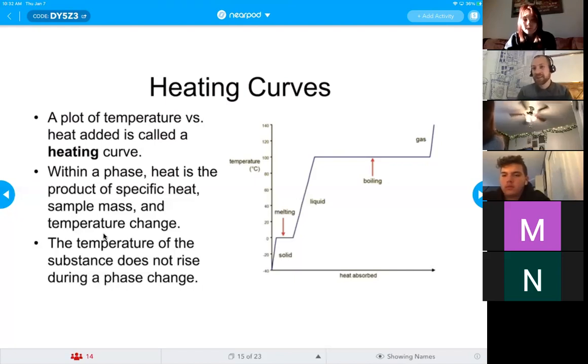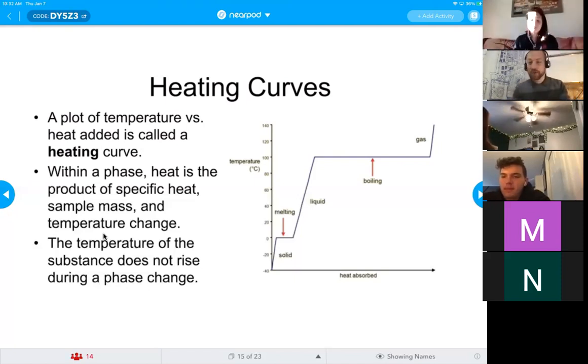Chocolate is really interesting because if you get it too hot, it will burn. If you get it to 107 degrees, it'll burn. If you get it too low, it won't melt. So double boilers are extraordinarily useful for chocolatiers because you can keep that temperature constant during that phase change.